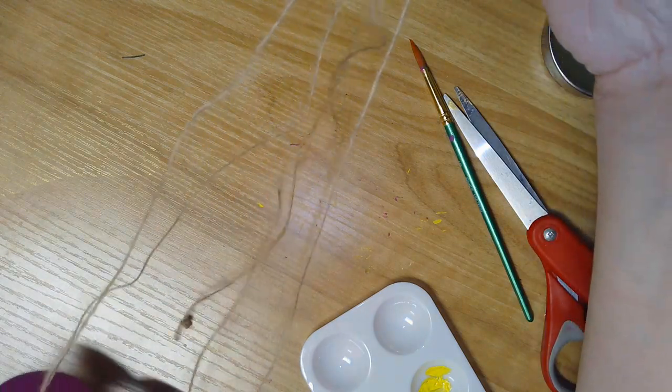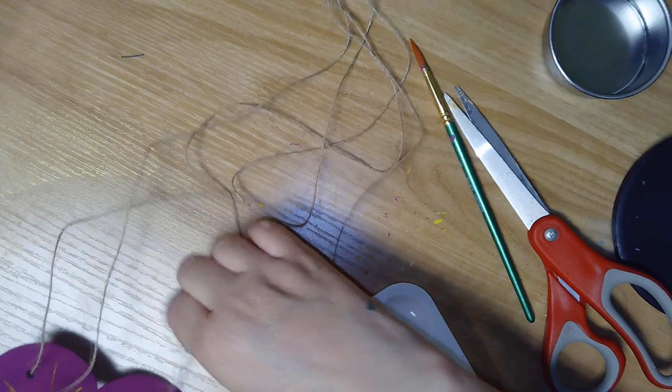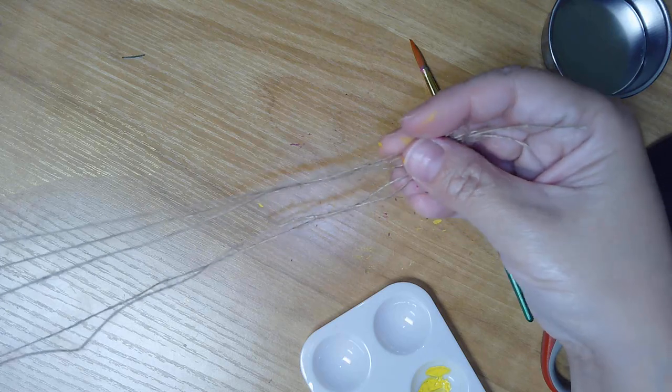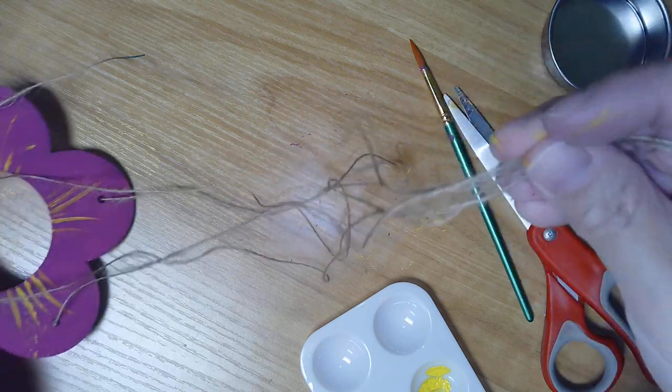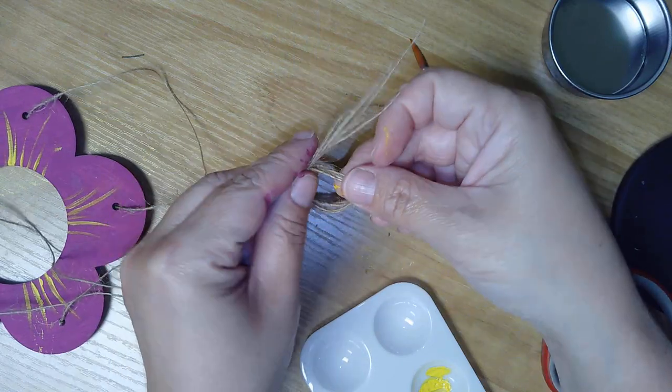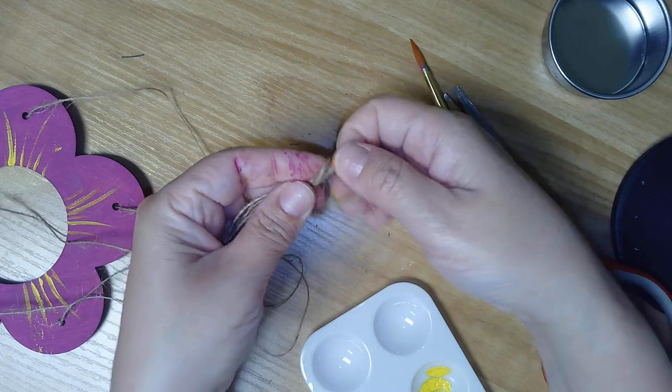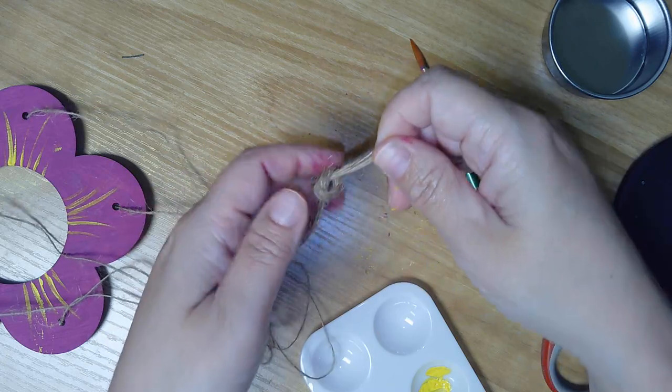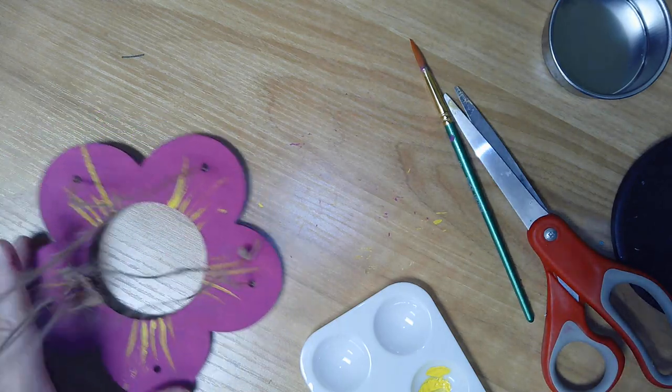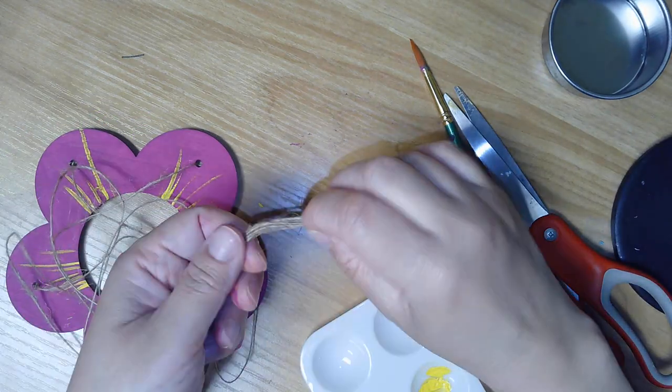Once you've got your five strings here, you're going to gather them all up, twist them around your two fingers, and then put this through. That'll make one knot.